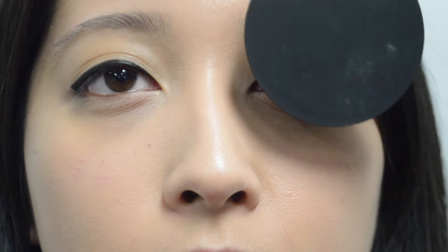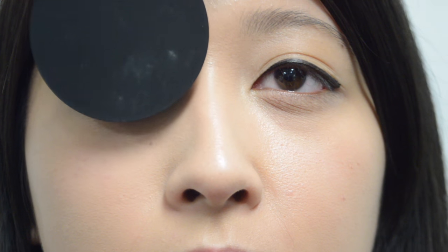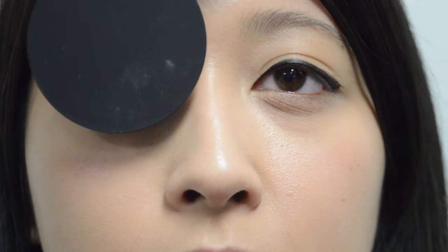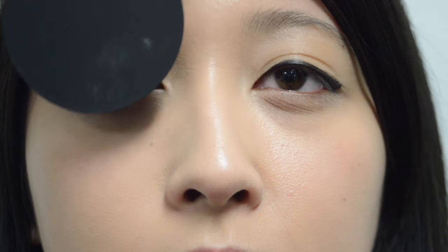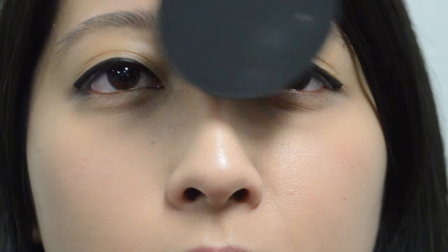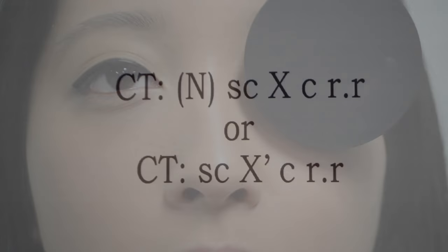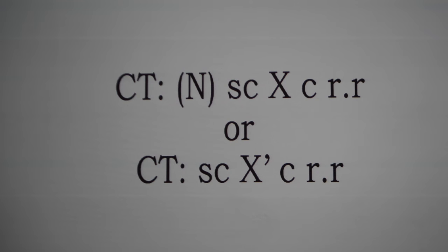This is the cover-uncover component of the cover test. This is the alternating cover test. From the cover test, you can see that Trissie has an exophoria with rapid recovery. These are two different ways to record it.